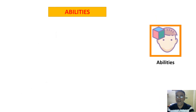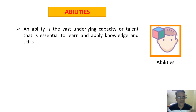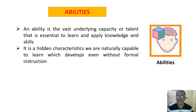The last component is abilities. Ability is the vast underlying capacity or talent that is essential to learn and apply knowledge and skills. It is a hidden characteristic — we are naturally capable to learn it, and it develops even without formal instruction.